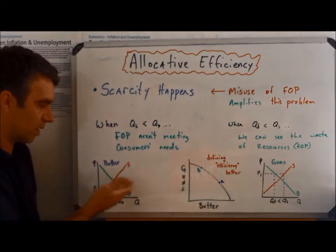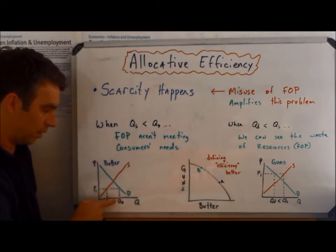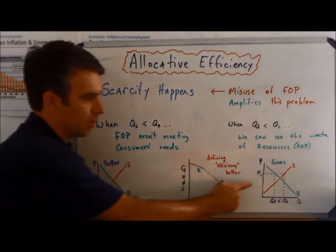And again, we could evidence that or we could correlate that to saying, well, we want more butter, we're willing to pay a higher price, and we want less guns.